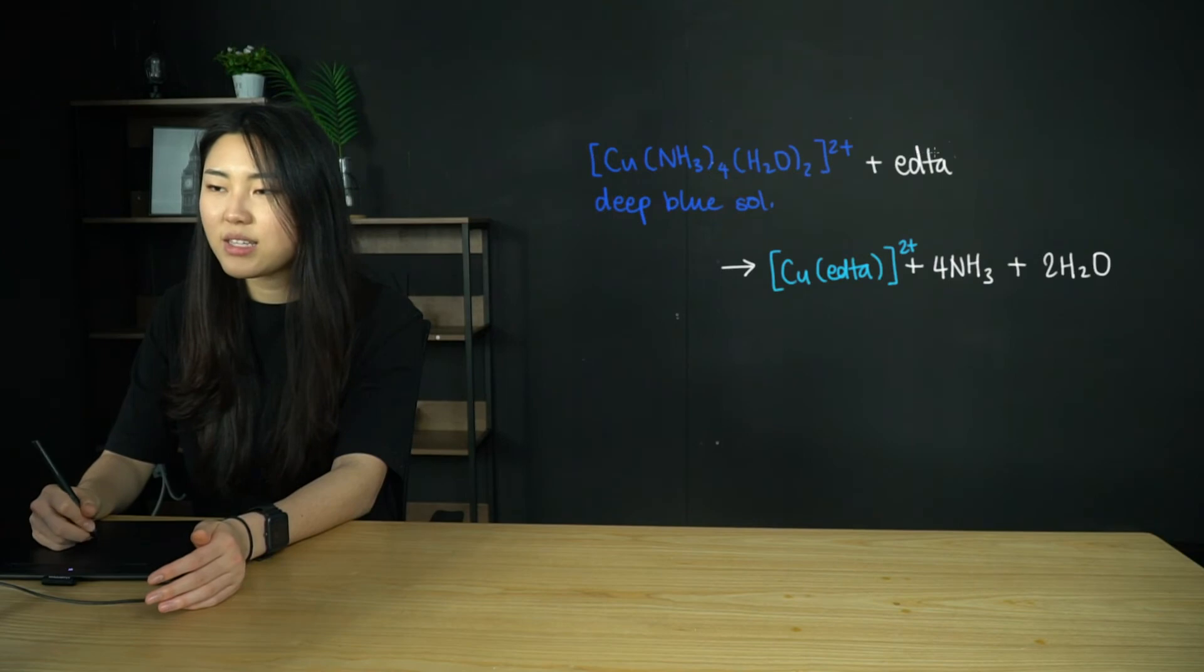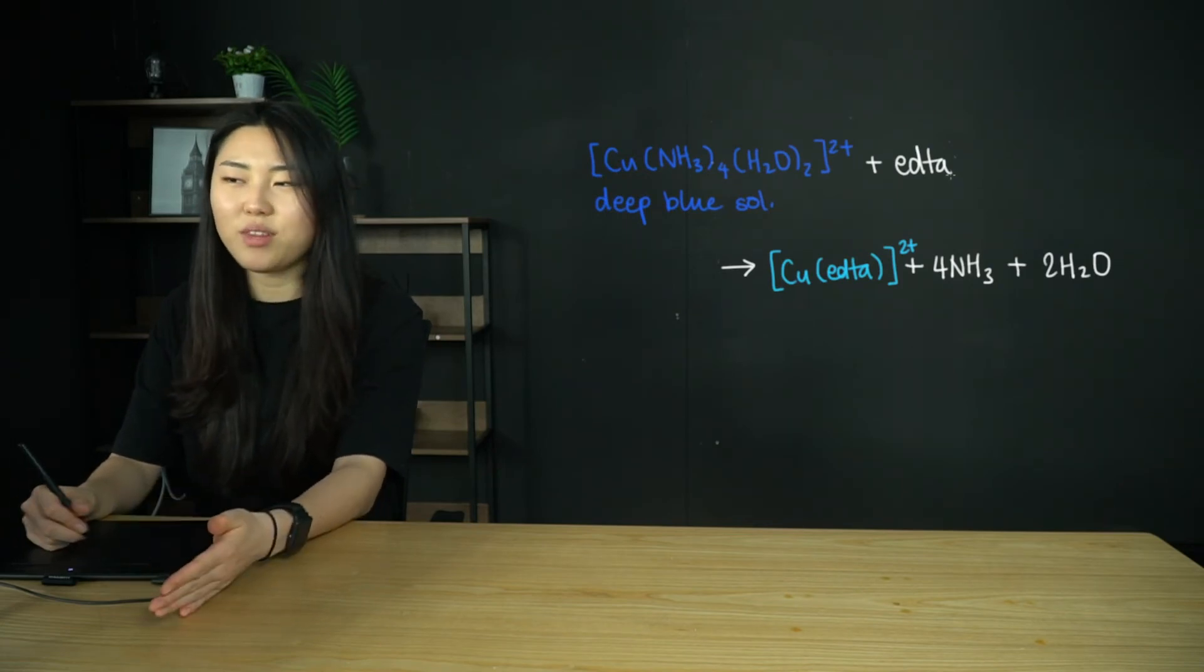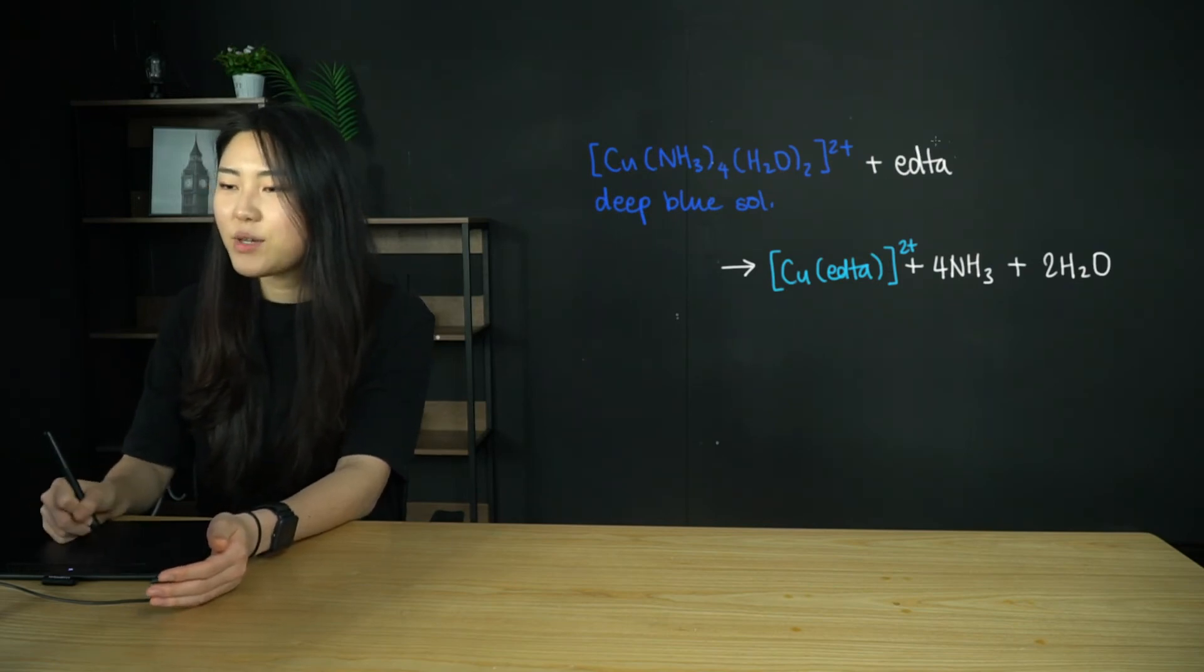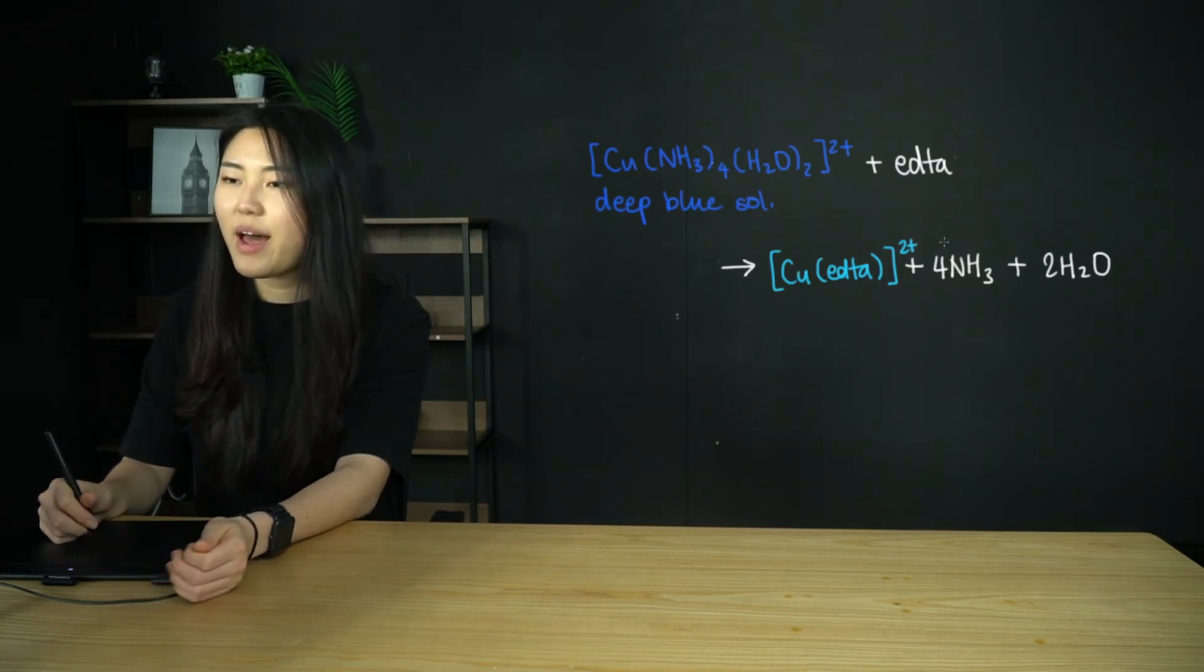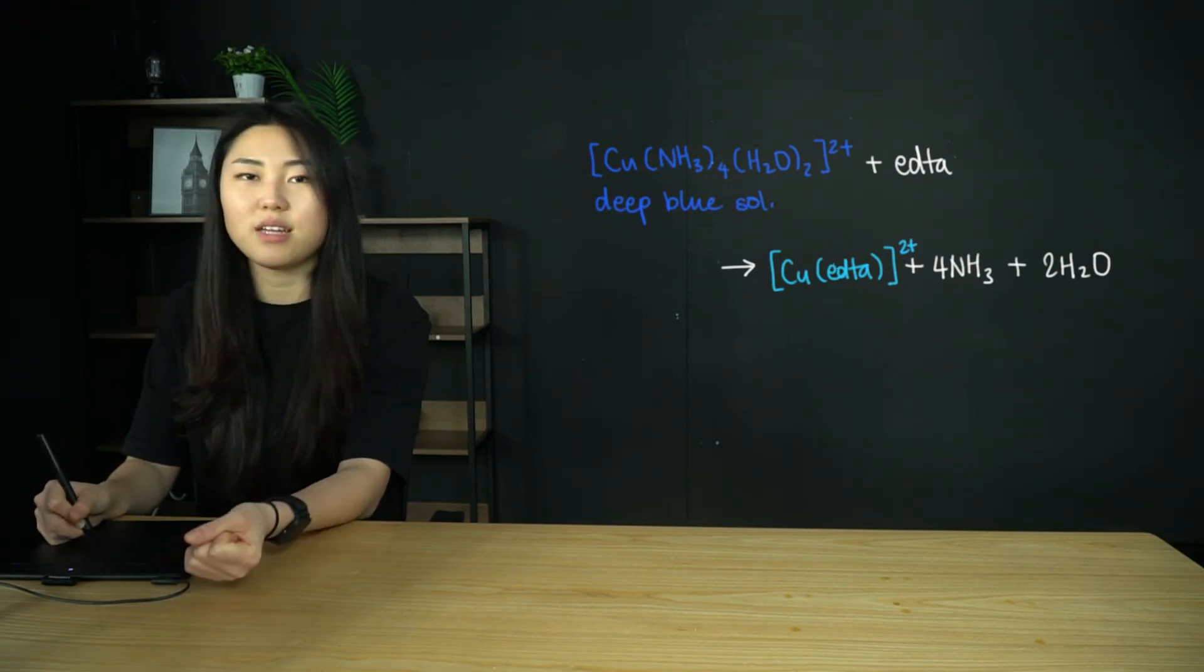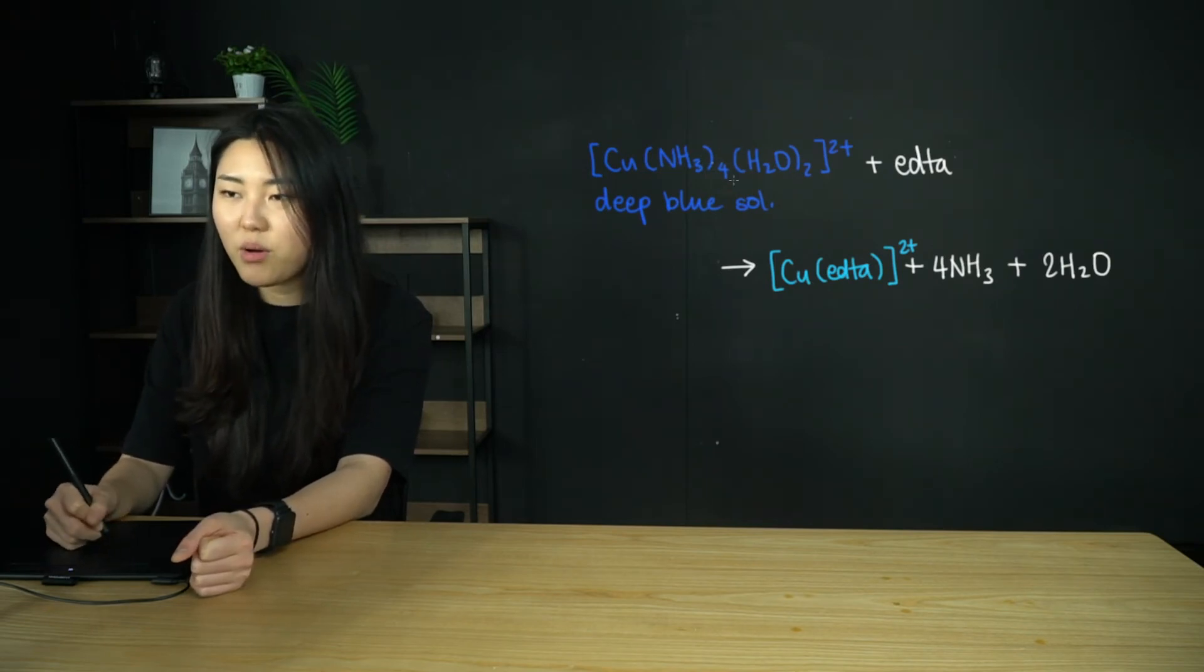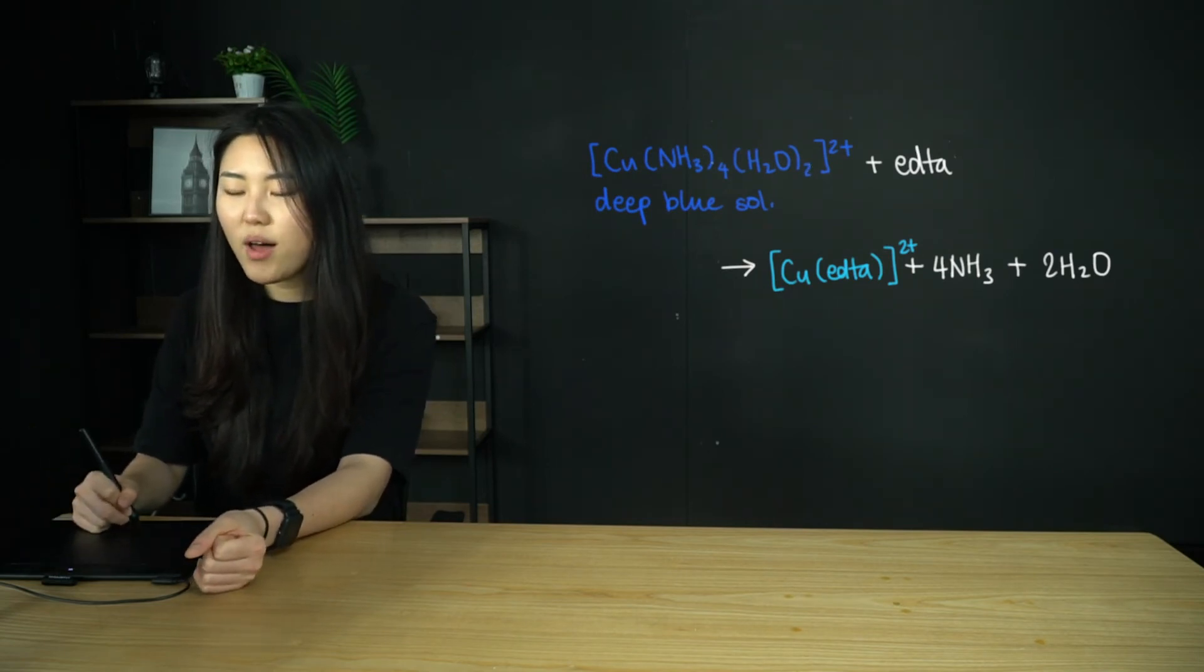If you add to this complex our hexadentate ligand, which is EDTA (this was also in topic one; I have briefly included the image of how this looks, but you don't have to know the whole structure), you're going to get a complex ion Cu(EDTA)2+. EDTA is a hexadentate ligand, so with just one molecule it forms six dative covalent bonds, meaning that the ammonia molecules and the water molecules are all going to be removed.